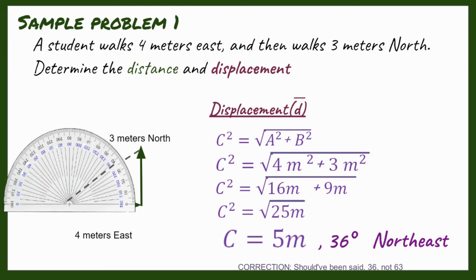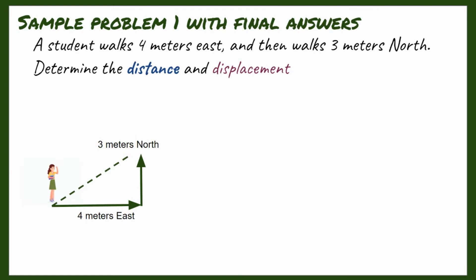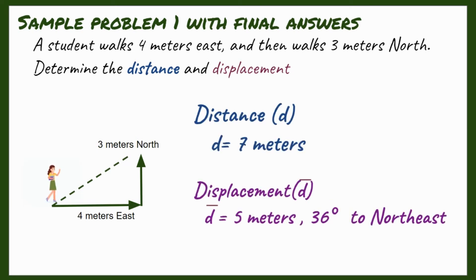Now, we both have the distance and displacement. So, distance, which is 7 meters, and the displacement, which is 5 meters, 63 degrees northeast.